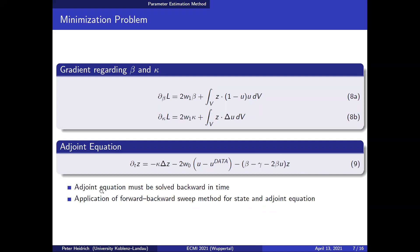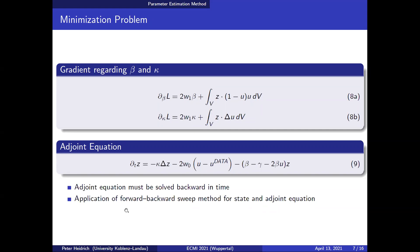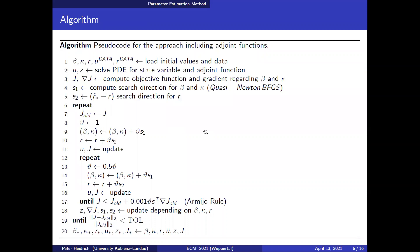We perform this with a so-called forward-backward sweep method — forward for the state variable and backward for the adjoint equation. The pseudo code for this approach: after loading the initial conditions, we solve for the state and adjoint functions, compute the objective function and its gradient, then compute the search direction for beta and kappa with the quasi-Newton method, and compute the search direction for r.